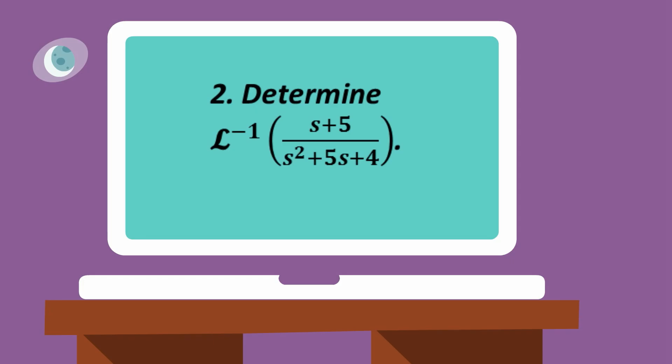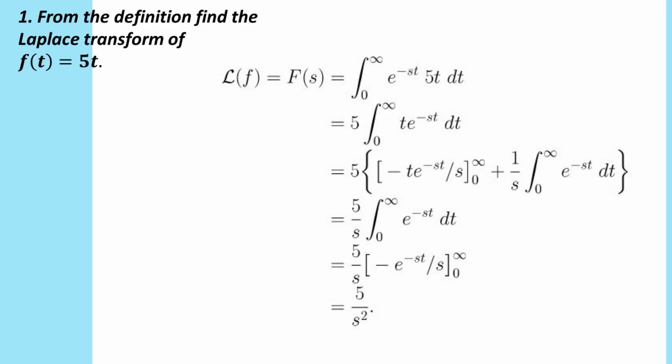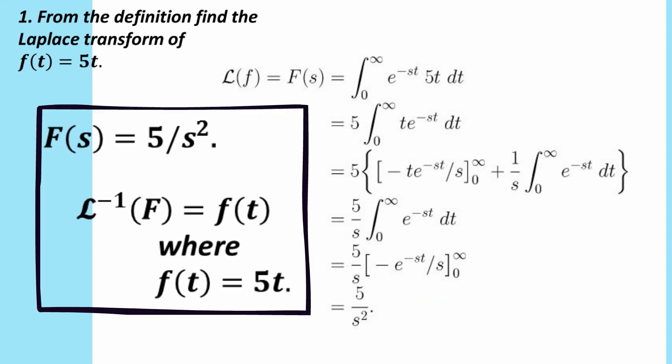In this second question, we haven't seen yet what this L with the power of negative 1 means. It's the inverse Laplace transform. And you've probably seen inverse functions in your studies. But if I could just go back to question 1, we can explain it with this example. We saw here that if we have f of t equals 5t, the Laplace transform is 5 on s squared. So we say that the inverse Laplace transform of big F is equal to f of t, where f of t is equal to 5t.